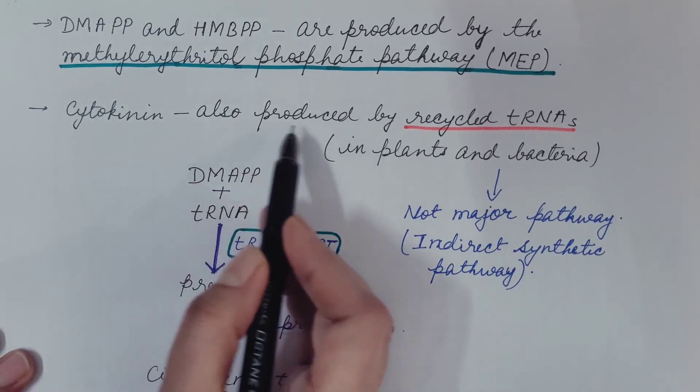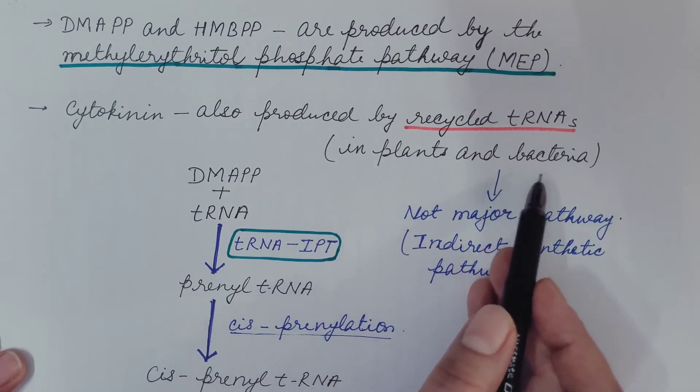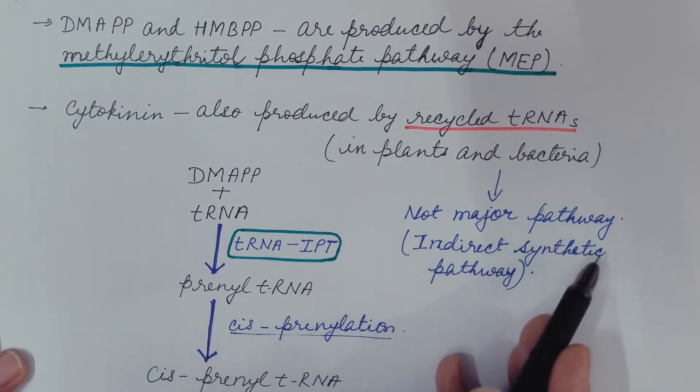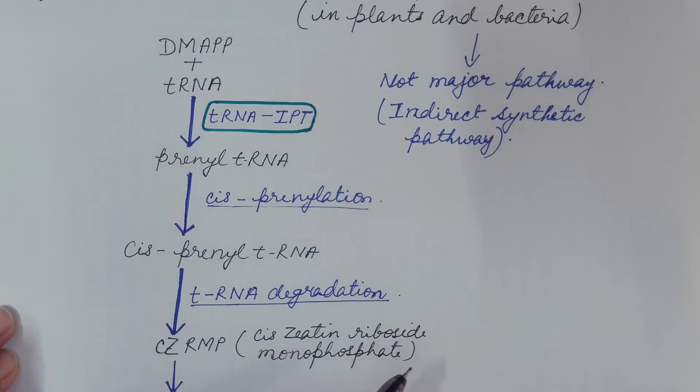Cytokinin is also produced by recycled transfer RNA, which is seen in plants as well as in bacteria. It is not a major pathway. It is an indirect synthetic pathway. Let us see this pathway.